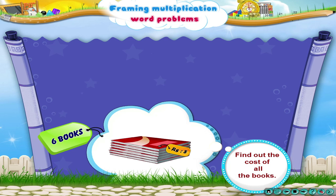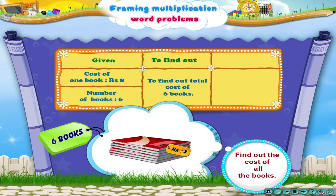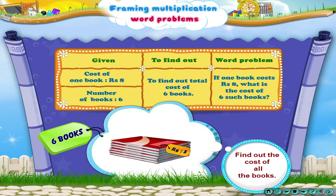It's a simple word problem in multiplication. You are given: the cost of one book is rupees 8, and the number of books you want to buy is 6. To find out the cost of 6 books, the word problem will be as follows: If one book costs rupees 8, what is the cost of 6 such books?